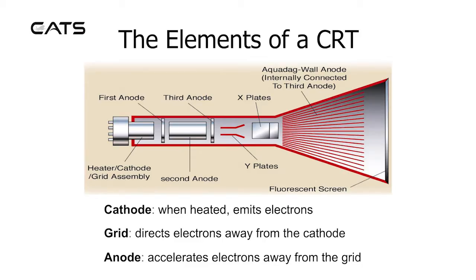The elements of a cathode ray tube: the cathode, when heated, emits electrons which pass through the first, second, and third anodes, and are deflected by X and Y plates onto a fluorescent screen. The grid directs electrons away from the cathode, and the anode accelerates electrons away from the grid.